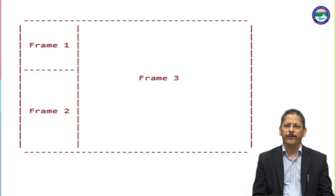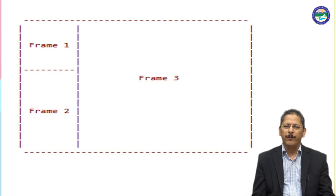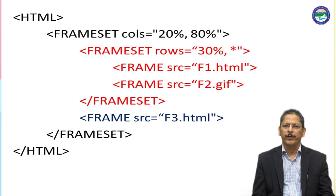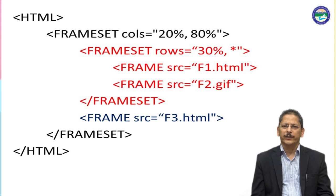You can see frame 1 is 30% and frame 2 is 70%. Inside the column, we have divided into two columns — column 1 and column 2. Column 1 has size 20%, and this column 1 is further divided into two parts: 30% and 70%, with F1 and F2 as source files. Frame 1 displays f1.html, frame 2 displays f2.gif, and frame 3 displays f3.html. The third file is displayed in the second frame, which is not further subdivided.